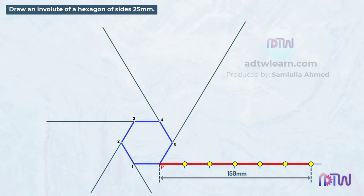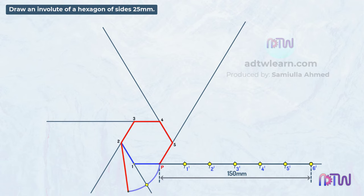Mark these points as 1-dash, 2-dash, 3-dash, 4-dash, 5-dash, and 6-dash. When we unwind the string from this hexagon — when the string reaches this line, the endpoint of the string will be here; when the string reaches the next line, the endpoint will be here; and so on.